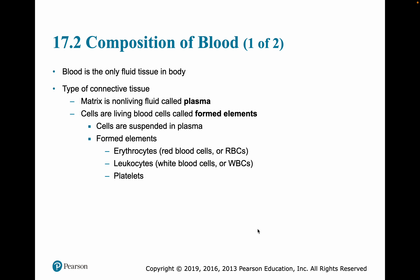Blood is the only fluid tissue in the body and is a type of connective tissue. Its matrix is a non-living fluid called plasma. Connective tissues have a matrix and a cellular component; the cells are living blood cells more correctly referred to as formed elements, because two out of three are not true cells. These formed elements — suspended in plasma — include erythrocytes (red blood cells), leukocytes (the true cells, white blood cells), and platelets, which are fragments of a cell called the megakaryocyte.